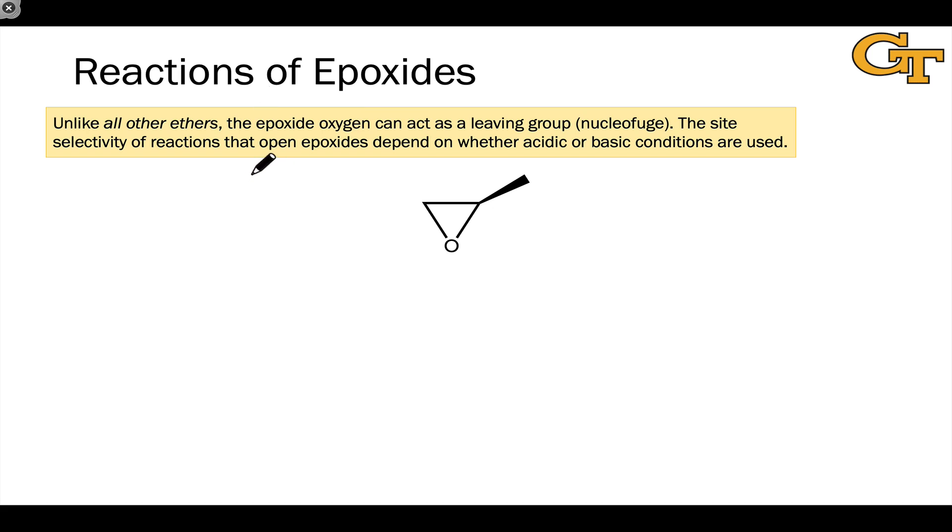Epoxides are really in a league of their own when it comes to ethers because unlike essentially all other ethers, the epoxide oxygen can act as a nucleophile in its own right without prior protonation in many cases. Under mildly basic conditions, we can observe opening of the epoxide ring in what amounts to a substitution reaction of one of the CO bonds within the epoxide ring.